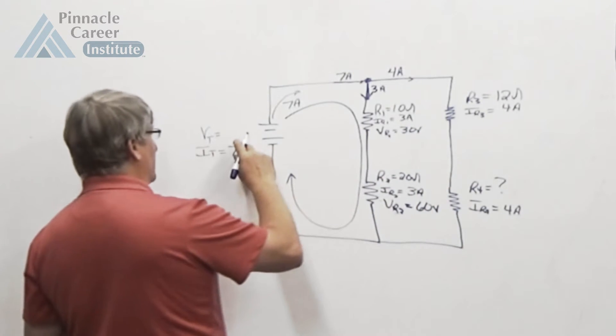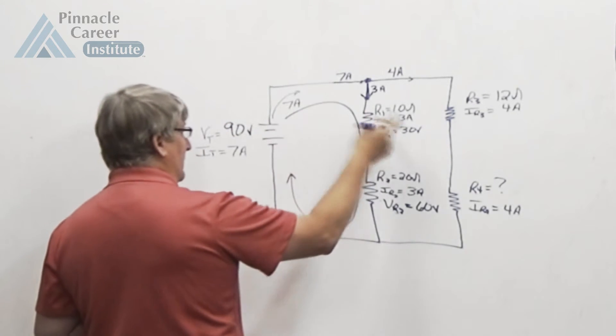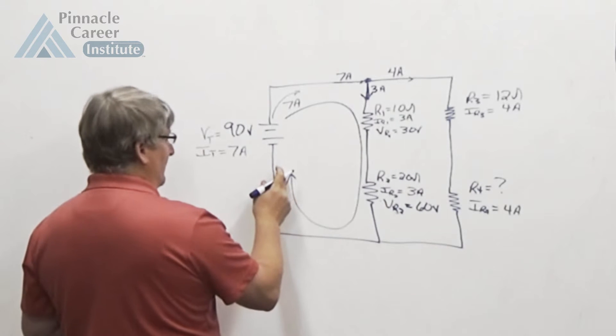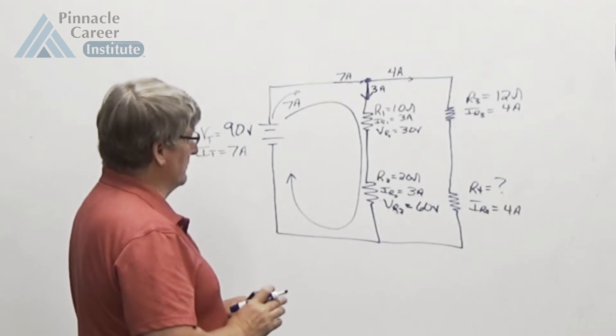I got 90 volts here, and so that tells me my voltage total is 90 volts. If it's in this loop, it has to be 90 minus 30 minus 60 and leave me with zero. Kirchoff's voltage law in that loop. So now I know my total voltage.